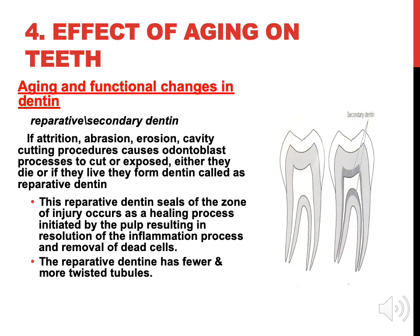Aging and functional changes in dentine: there is manifestation of reparative or secondary dentine. If attrition, abrasion, erosion, or cavity cutting processes cause odontoblast processes to be cut or exposed, either they die or, if they live, they form dentine called reparative dentine. This reparative dentine seals off the zone of injury as a healing process, initiated by the pulp, resulting in resolution of the inflammation and removal of the damaged cells. The reparative dentine has fewer and more twisted tubules.